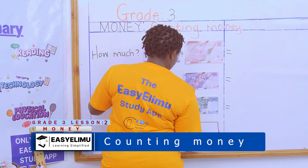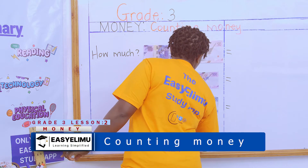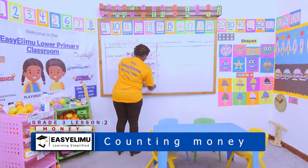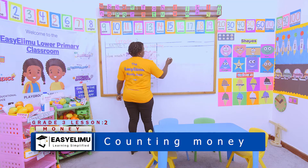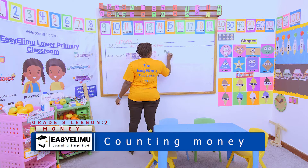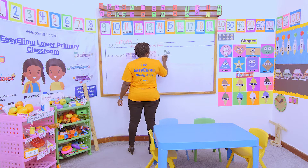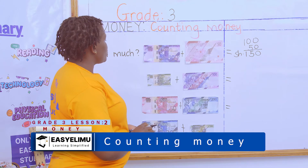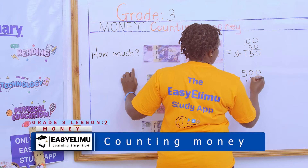Now we have to find out how much is this. Here they're saying you have 100 shillings and then 50 shillings. So how much do you have? 0 and a 0 gives you 0, 5 and a 0, and a 1 and a 0 gives you — so how much do you have altogether? When you add, it gives you 150 shillings. This one tells you you have a 500 shilling note and a 100 shilling note.